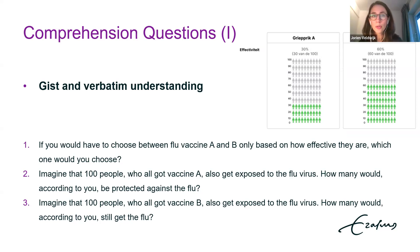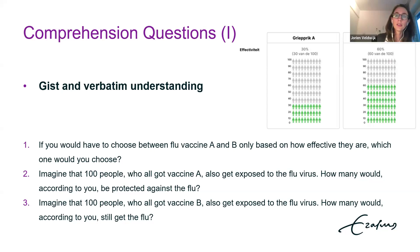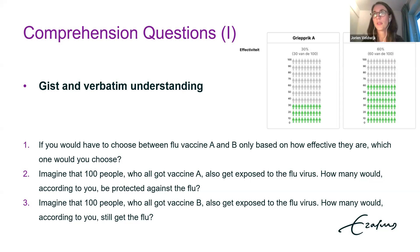While carefully designing training materials, it's also important to assess respondents' attention and understanding of those materials. One option is to include comprehension or quiz questions covering different attributes and levels. The design of these questions heavily depends on what respondents need to know and understand. In a recent survey, we quizzed respondents on both their gist understanding of effectiveness of flu vaccines as well as their verbatim understanding of those risks — for example, asking which vaccine offers better protection, and asking 'if 100 people get flu vaccine A and are exposed to the flu virus, how many would be protected?'